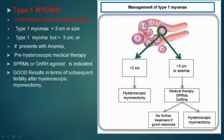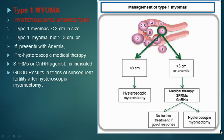For type 1 myoma — those which are intracavitary but extending into the myometrium with less than 50% extension — if it is less than 3 cm, you do a hysteroscopic myomectomy. If it is more than 3 cm and the patient has anemia, correct the anemia with medical therapy: give SPRMs and GnRH agonists. If there is a good response, no further treatment is required. If it does not respond, you do a hysteroscopic myomectomy.